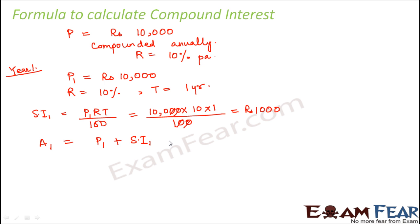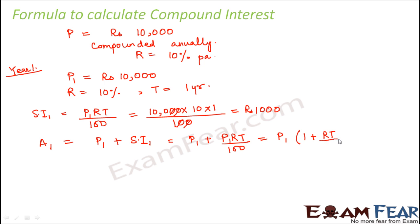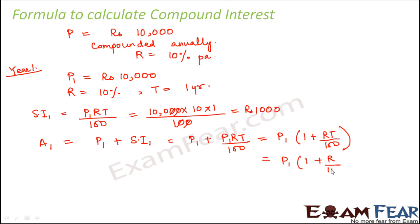This can be written as P₁ + (P₁ × R × T) / 100, or factoring out, P₁ × (1 + RT/100). Since the time period T is 1 year, this simplifies to P₁ × (1 + R/100). So for year 1, the amount at the end of year 1 is A₁ = P₁ × (1 + R/100).